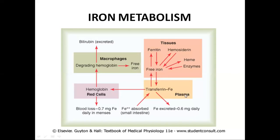Within the plasma, iron is transferred in the form of transferrin. Hemoglobin is present inside the RBCs and is formed by iron. Within the macrophages, degrading hemoglobin is broken down into free iron and bilirubin, which is excreted. Normal iron excretion in females via the menstrual cycle is 0.7 mg, and in feces it is almost 0.6 mg daily.